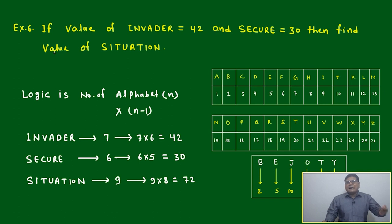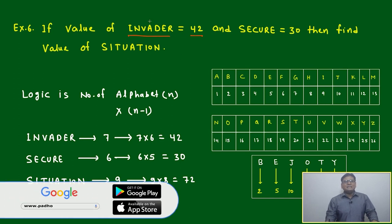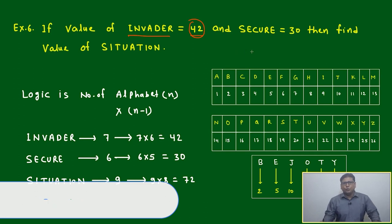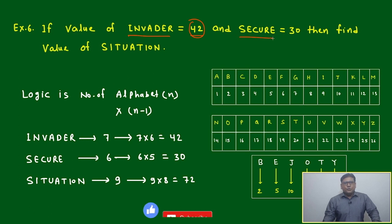For you, it will be easy to convert any of the words, but for those facing the question, cracking the logic will be one of the tasks. Here, if the value of INVADER is 42 based on some logic we don't know, we have to find it. And SECURE is 30, then find the value of SITUATION.